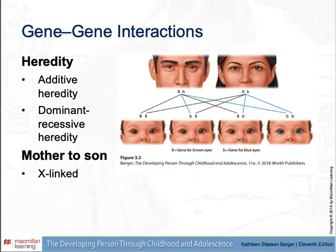X-linked traits are passed specifically from mother to son. The gene is located on the X chromosome, and females are only carriers of the gene, while males will exhibit the trait that is the result of that gene.